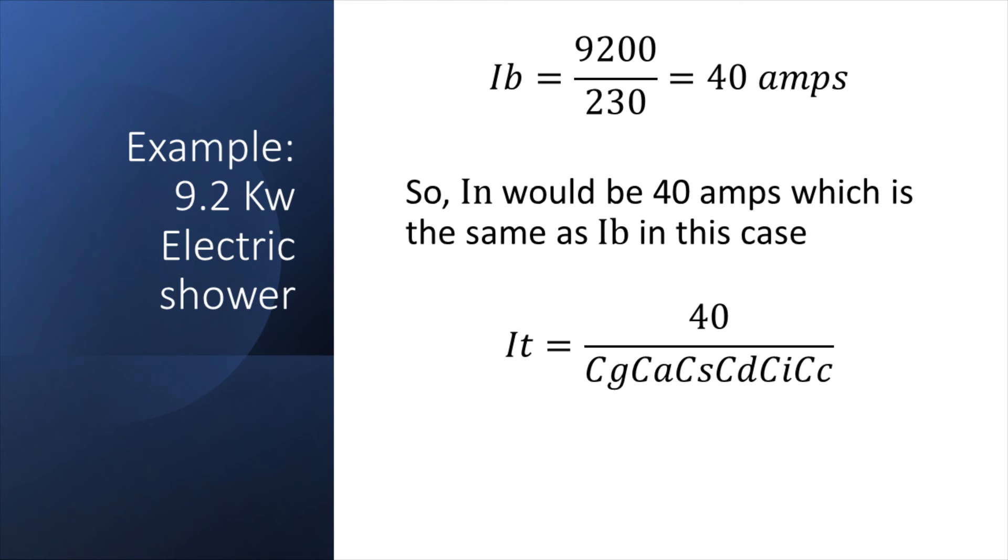In this first example, I've done a calculation for a 9.2 kilowatt electric shower. So the design current IB, we've got 9200 divided by 230, which gives us 40 amps. In this situation the IN would be 40 amps, which is the same as the IB. So in this case the calculation is the same. The value for IT would be equal to 40 divided by any applicable correction factors, and that would give us our IZ.